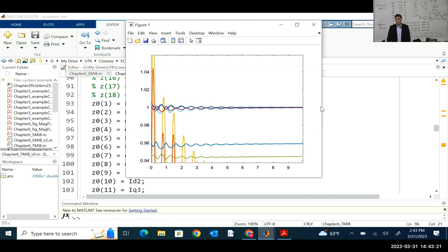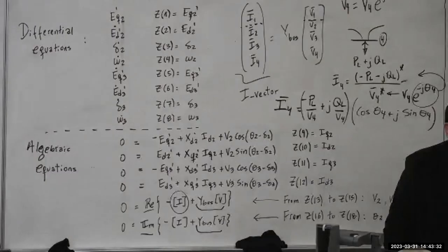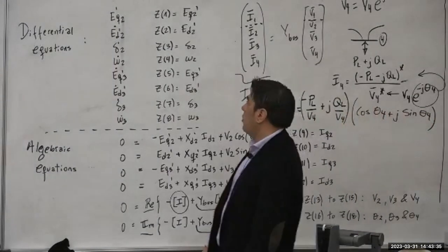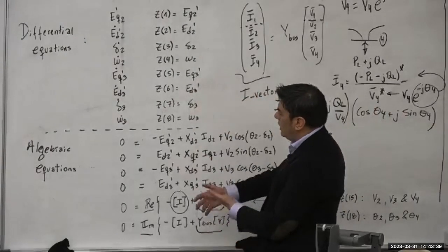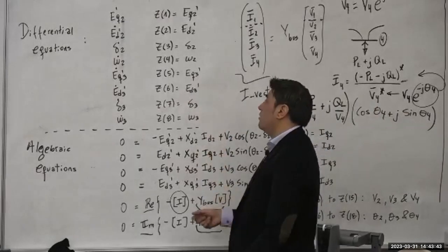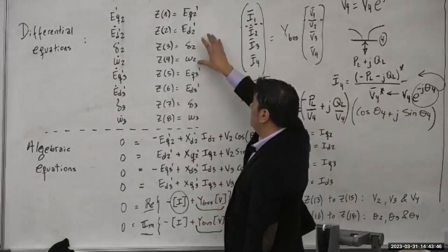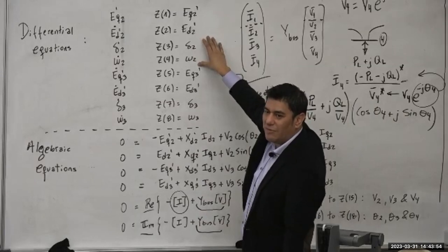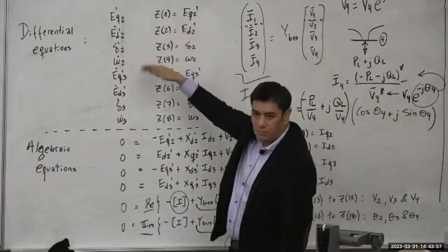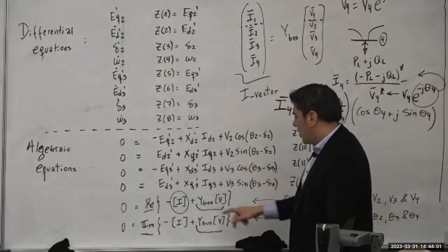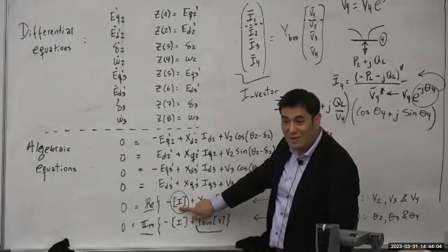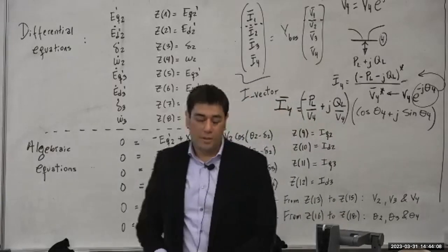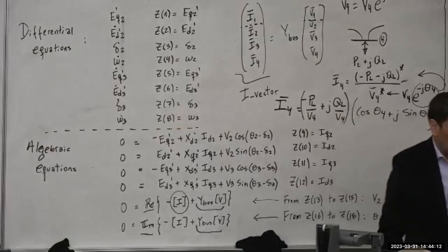In a system with an infinite bus, frequency won't deviate because the infinite bus holds it. But in a finite system with only generators with inertia, a generator trip causes a large power removal, a power imbalance, and frequency deviation. We could study that disturbance when we add the governor to the generation. To impose a generator trip in this code: isolate the generator equations so they're disconnected from the rest, set the injected currents to zero, and the system handles it.